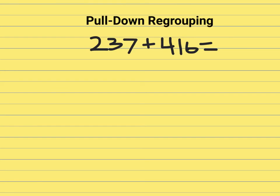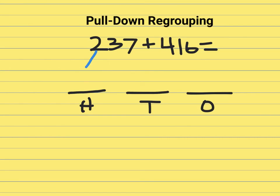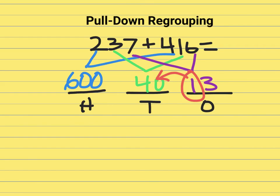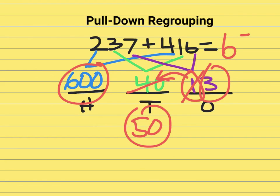Here is our final strategy: pull down strategy with regrouping. I'll go ahead and set up hundreds, tens, ones. I've got 200 and 400 so I have 600. I have 30 and 10 so this is 40. And then I have 7 and 6, that gives me 13. In the ones place I have a 10 and that 10 needs to be pushed over to the tens place, so 40 is now 50. The final answer is 653.